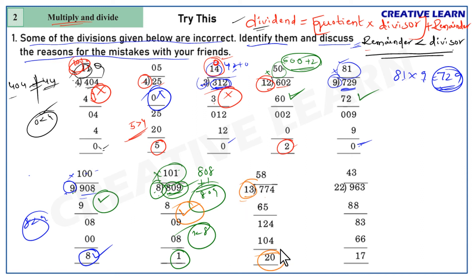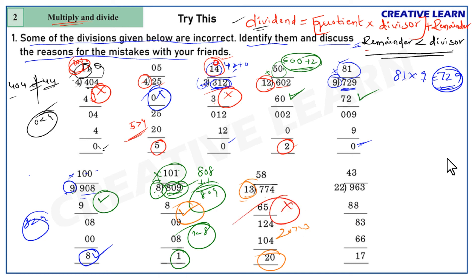Next, 774 divided by 13: remainder 20, divisor 13. Since 20 is greater than 13, the second rule is not satisfied. So this is the incorrect division.